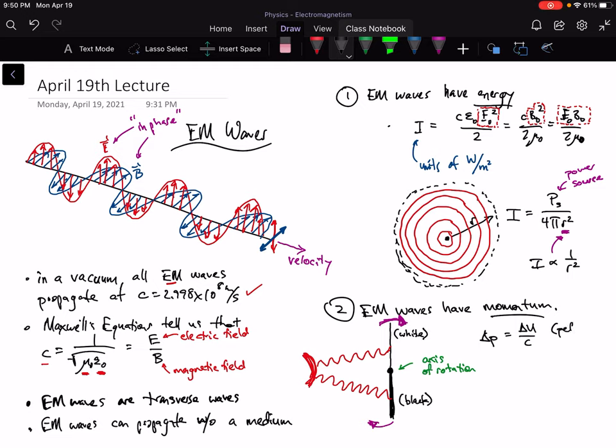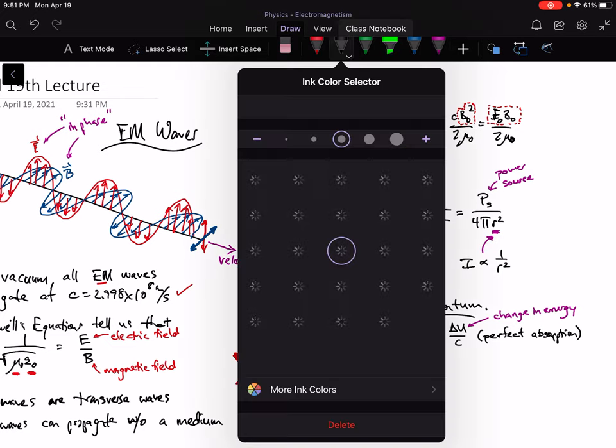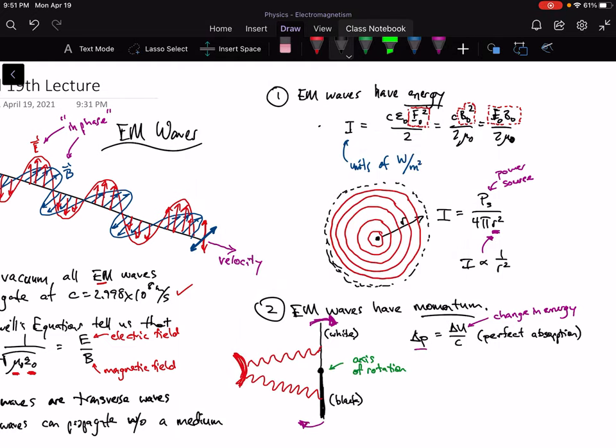is that if you have a situation where you have perfect absorption. Then the change in energy of the object divided by the speed of light is equal to the change in momentum of the object.